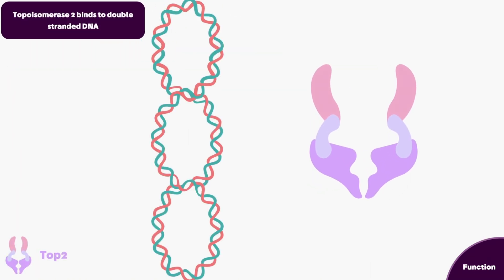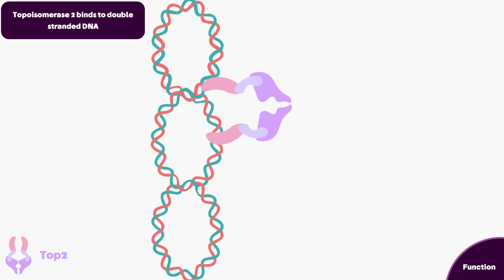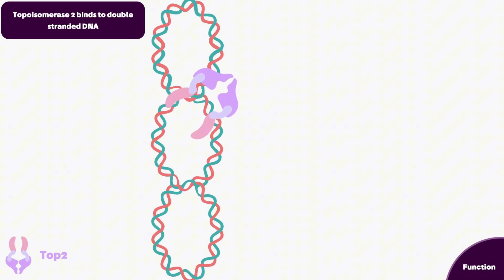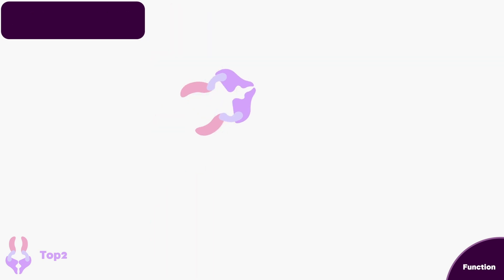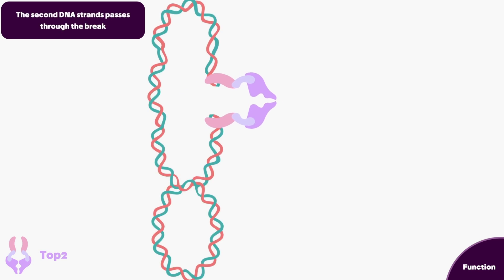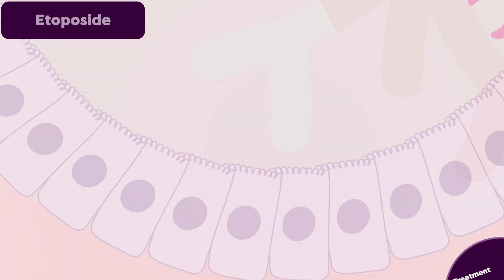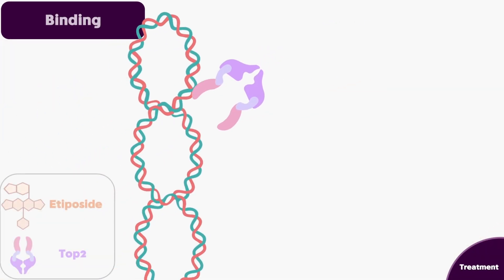Now let's look at the topo 2 function under normal physiological conditions. First, topo 2 binds to the double-stranded DNA, then it cleaves both DNA strands, allowing passage of one strand over the other to relieve the supercoiling ahead. Lastly, the enzyme reseals the gap it created.